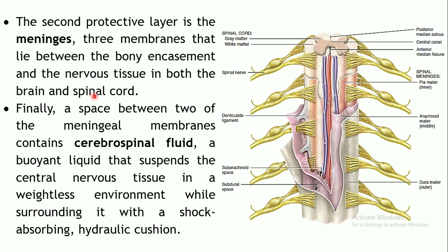These are called spinal meninges when protecting the spinal cord, and cranial meninges when protecting the brain. The three layers are the same with slight modifications in organization. The spinal meninges are in continuation with the cranial meninges. There is one more protective layer — the space in between two meningeal membranes contains a fluid called cerebrospinal fluid.